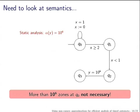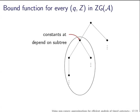But static analysis is also not enough. For example, by the static analysis algorithm y would be assigned 10^6 since it is not reset. But careful observation shows that q2 is not reachable at all — the guard requires x greater than or equal to 2, but another guard requires x less than 1, so the automaton can never reach q2. Instead of associating a bound function to every state, we want to associate one to every node (q, Z) in the zone graph.